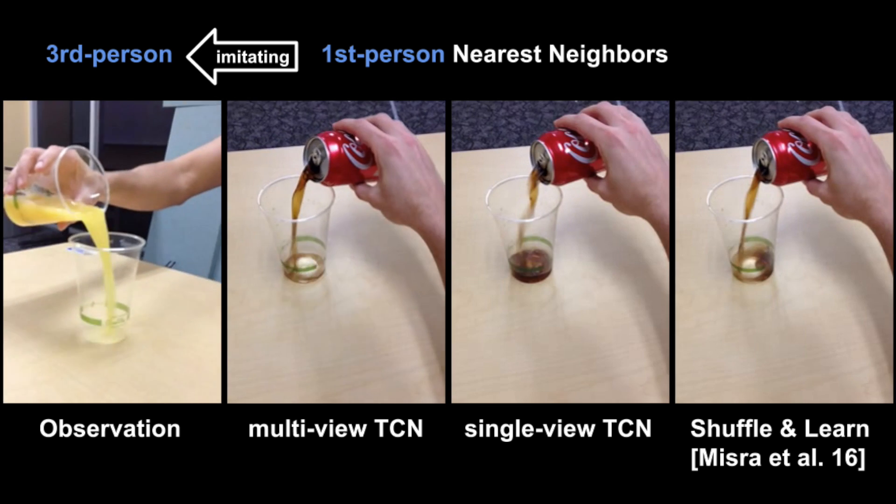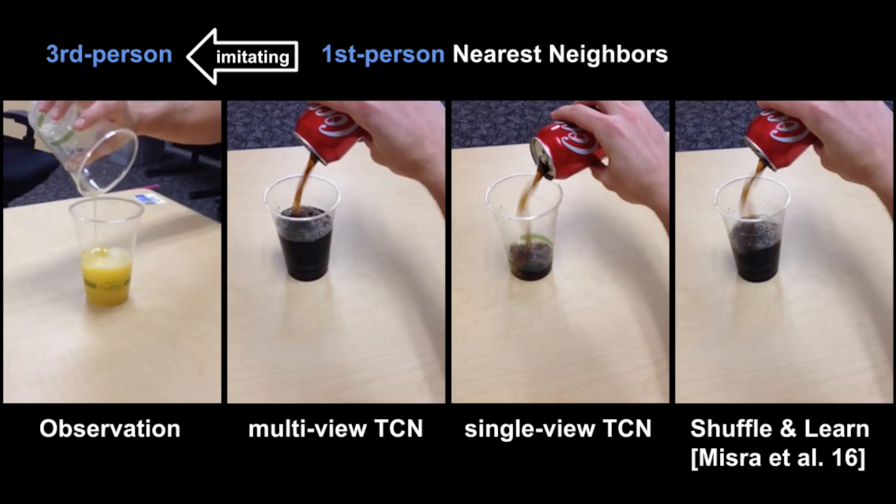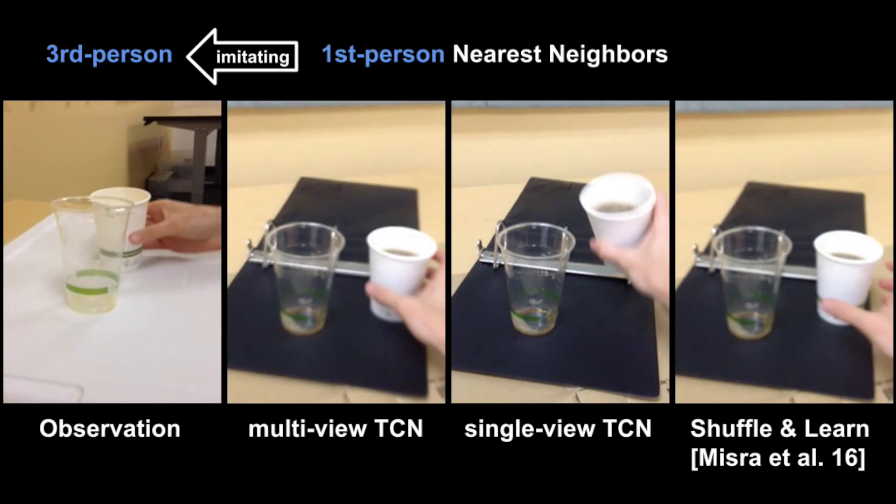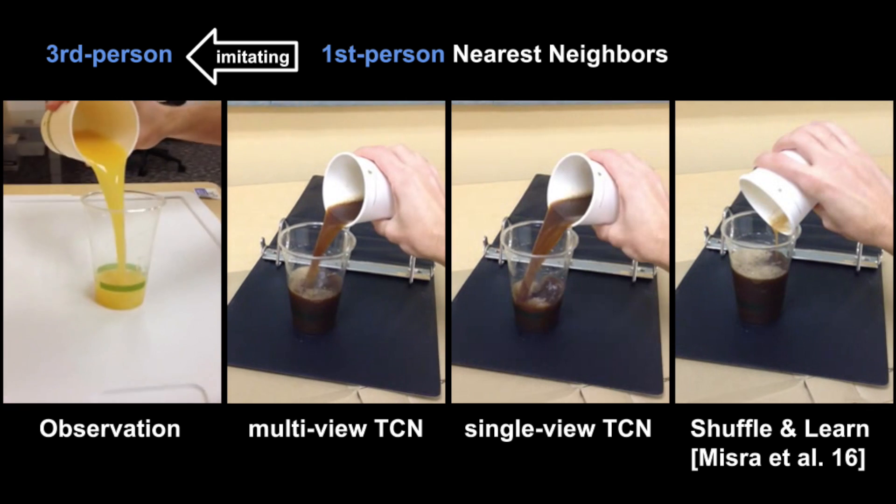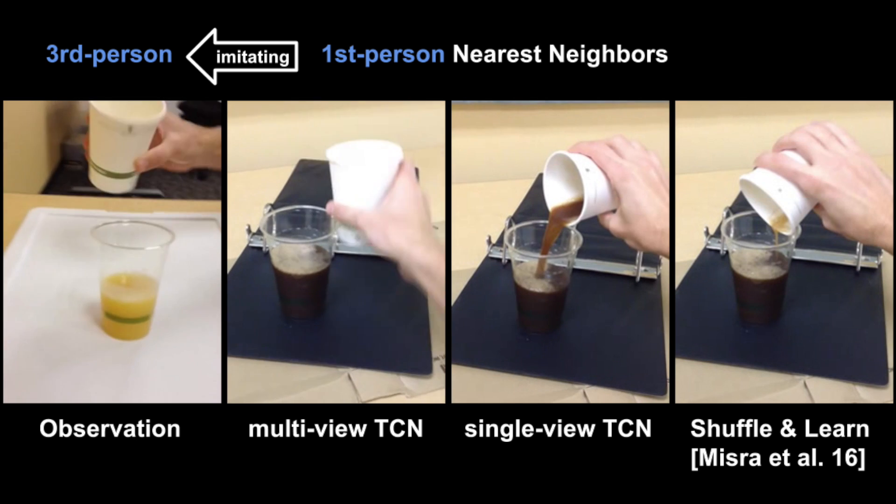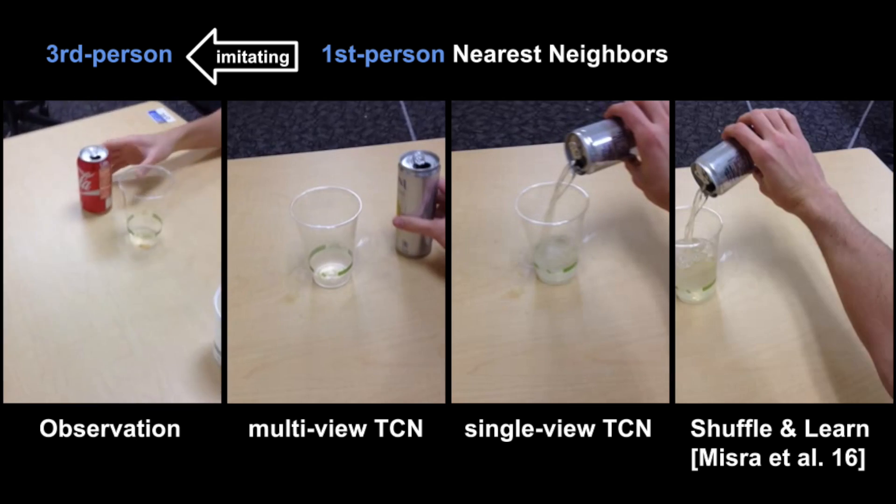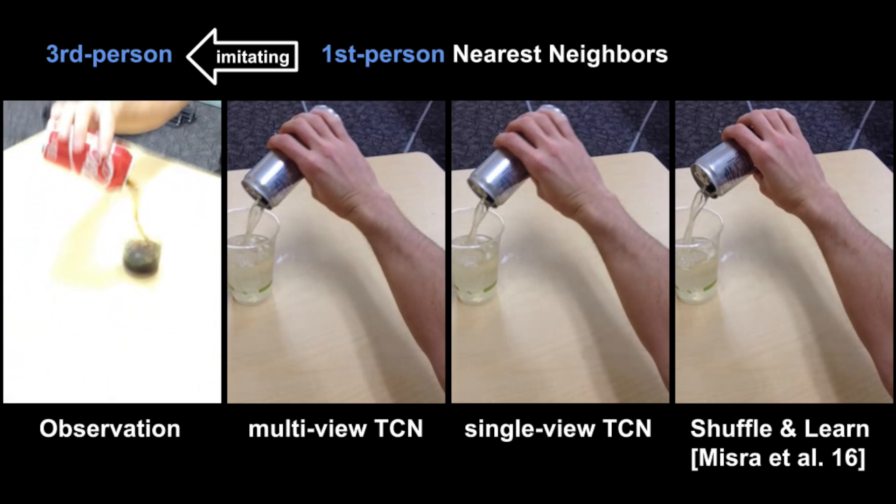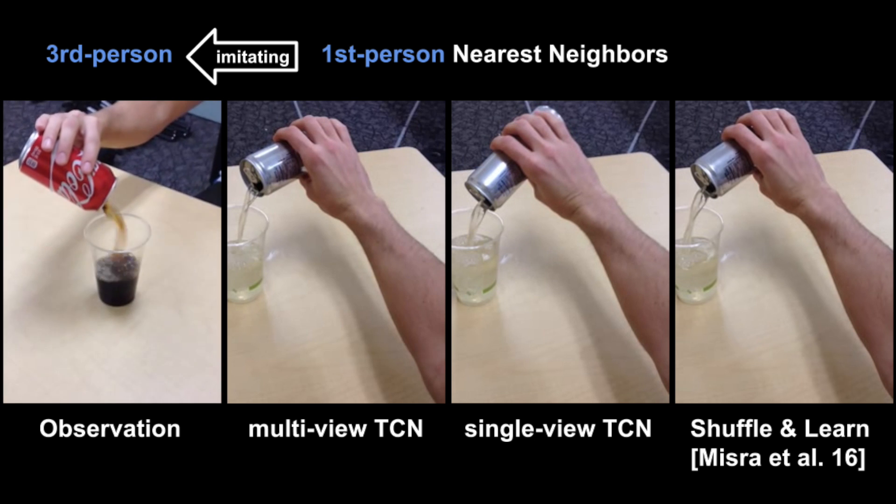Here we compare multiple models: Multi-view TCN, Single-view TCN, and Shuffle and Learn. Notice that the TCN model is robust to noise in the demonstrations, such as motion blur and saturation, as well as large variations in scale, viewpoint, and translation.